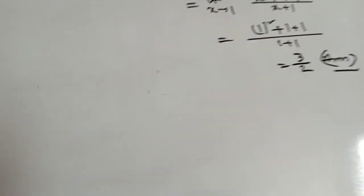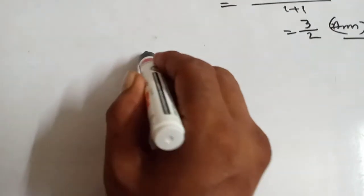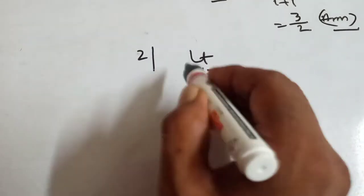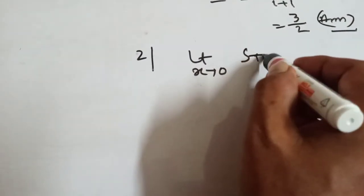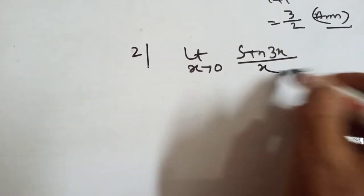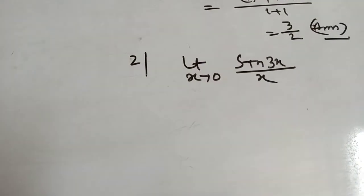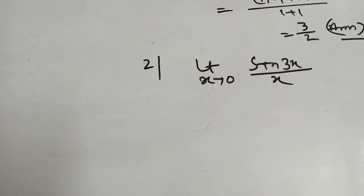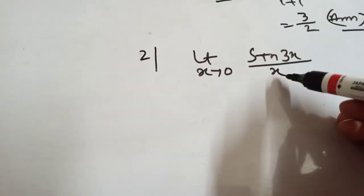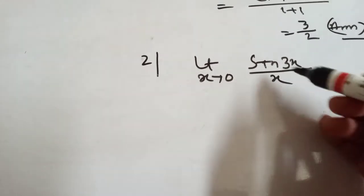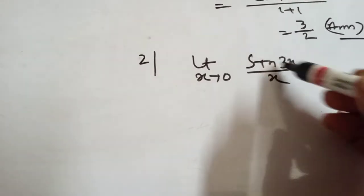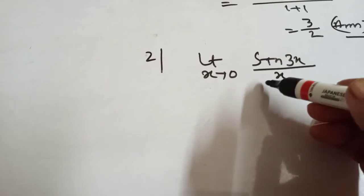Now next problem. If x is given, limit x tends to 0 of sin 3x by x. In the previous class I discussed that sin x by x equals 1 when limit x tends to 0. But here we have sin 3x, so the argument is 3x.